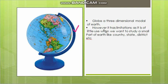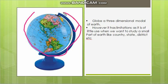The globe has a lot of limitations. If you want to find the whole Earth, the whole Earth is useful. But if you want to find details of India, the continent, the country, or a district — the globe is not sufficient, so that limitation is global.